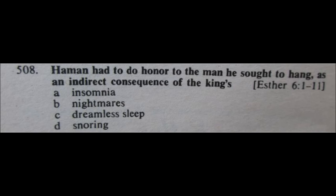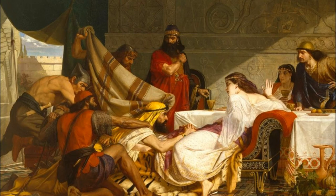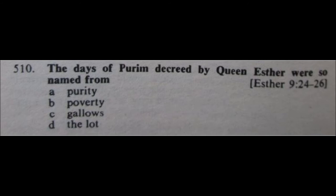Question number 509: Haman's final tactical error was, in the presence of the king, to A) threaten Esther with bodily harm, B) vilify Esther, C) agree to compulsory arbitration, or D) beg his life from Esther. It is definitely D, beg his life from Esther — that was his final mistake. Question 510: The days of Purim decreed by Queen Esther were so named from A) purity, B) poverty, C) gallows, or D) the lot. It is definitely D, the lot.